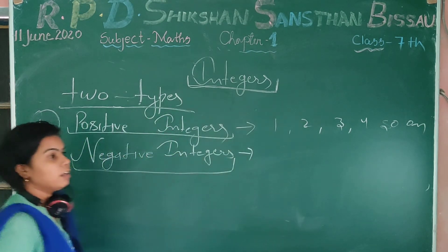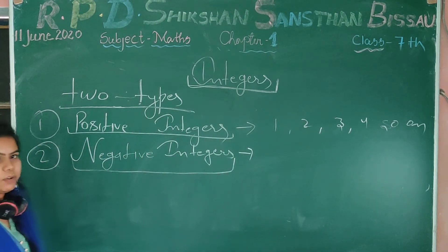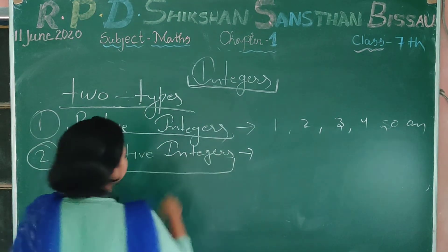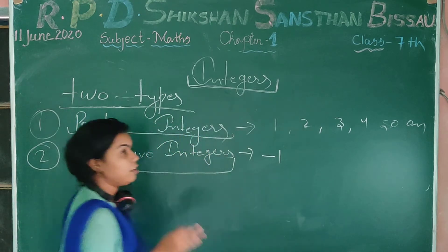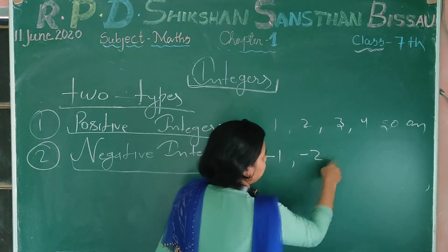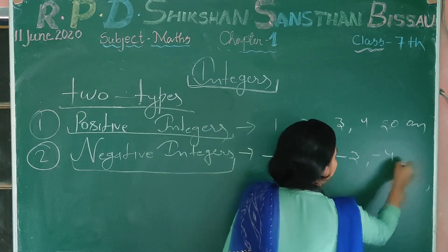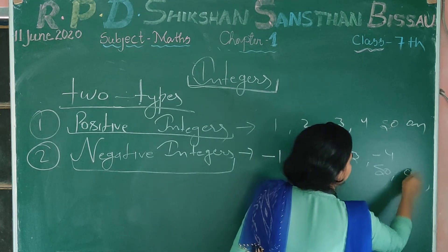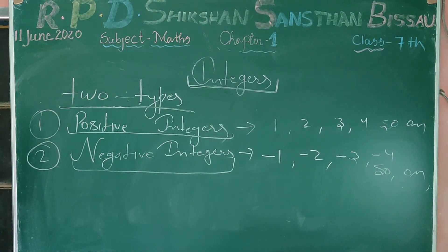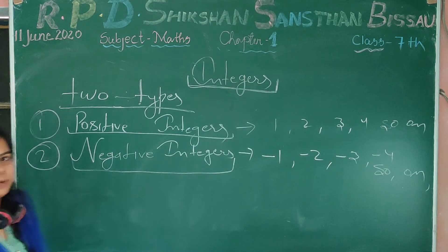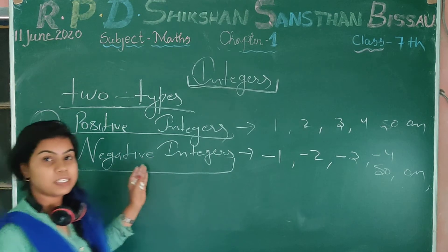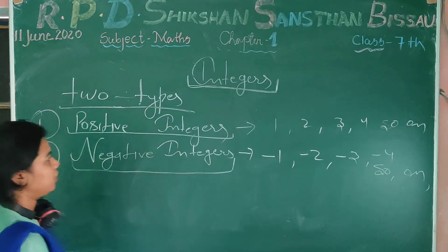Today I will tell you about basic knowledge of integers — the starting chapter. Negative integers are all negative values: minus 1, minus 2, minus 3, minus 4 and so on. This counting is infinite. So there are two types of integers: positive and negative. We have studied these in previous classes.